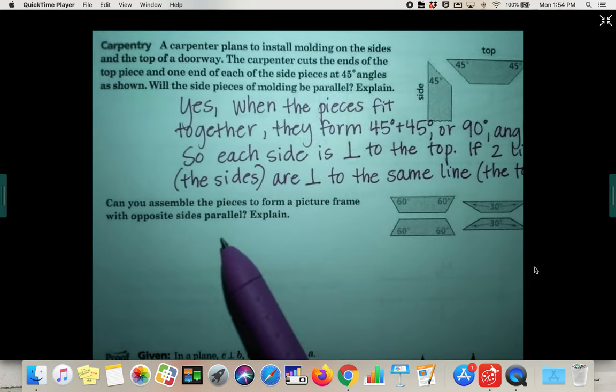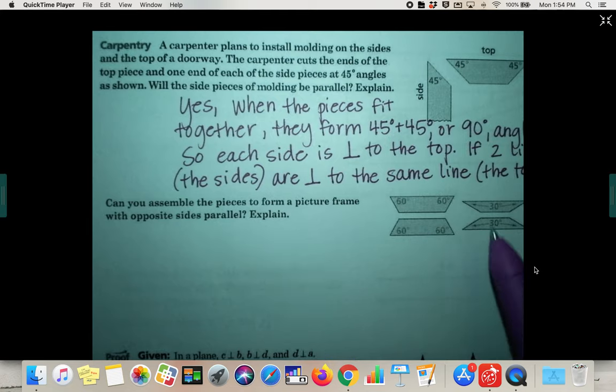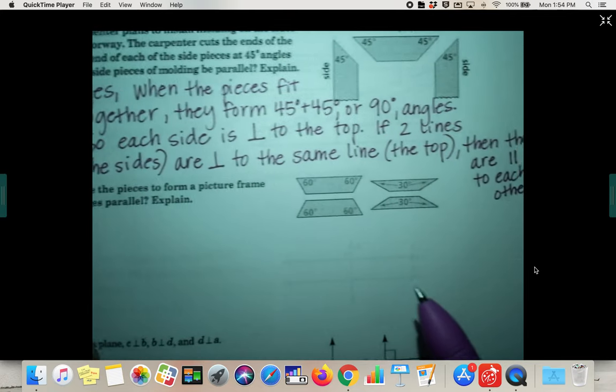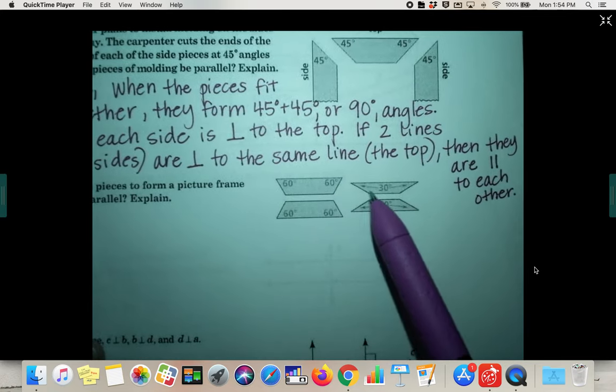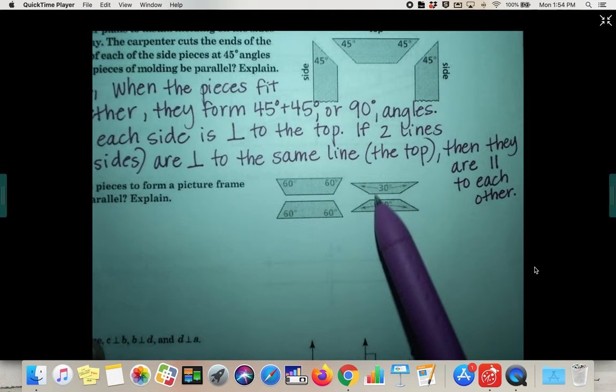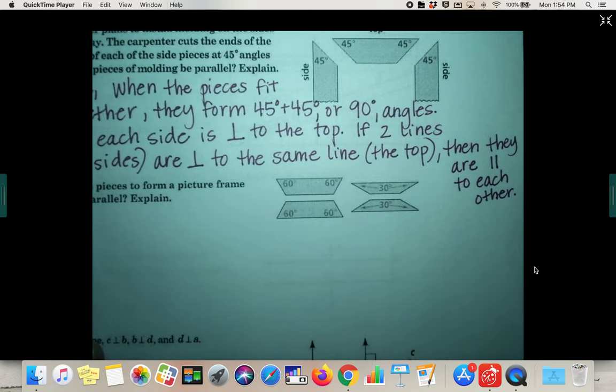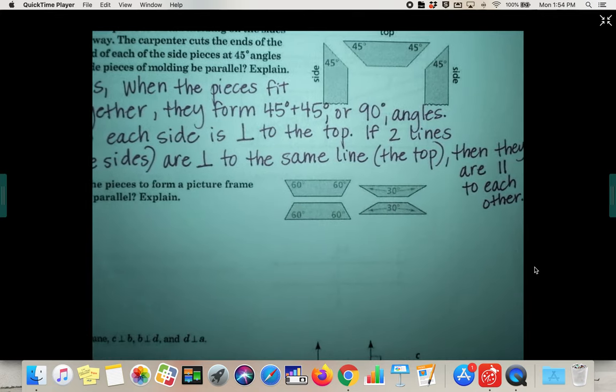The next part says, can you assemble the pieces here at the right to form a picture frame with opposite sides parallel? So can you put these together to make a picture frame? Obviously, this would be like top, side, bottom, other side, to form a picture frame with opposite sides being parallel.